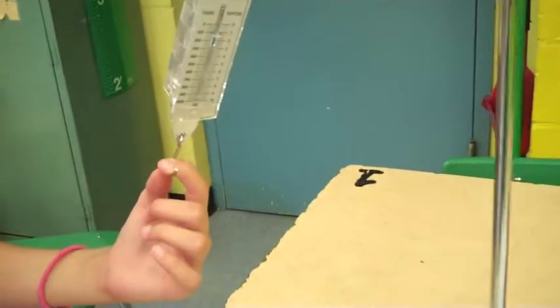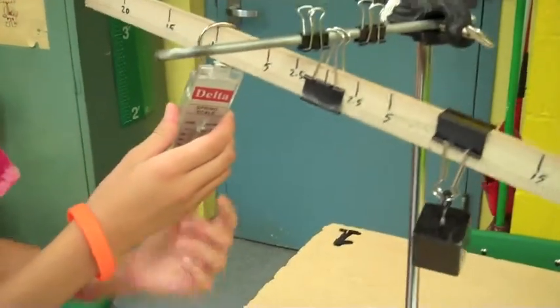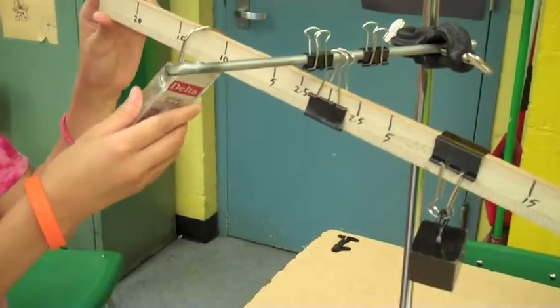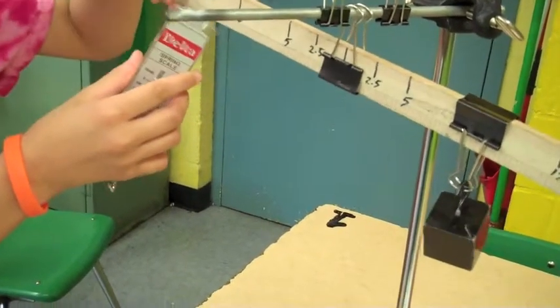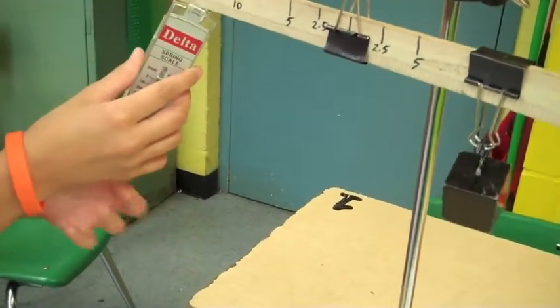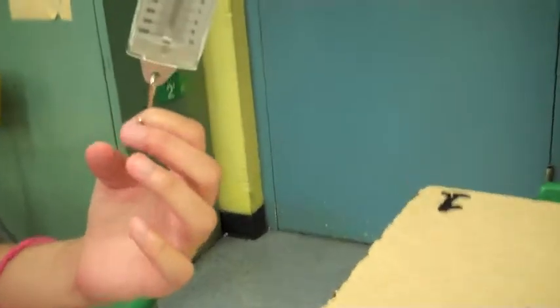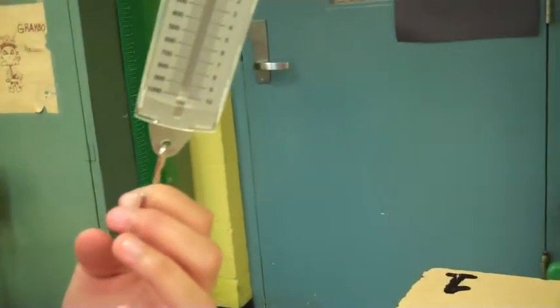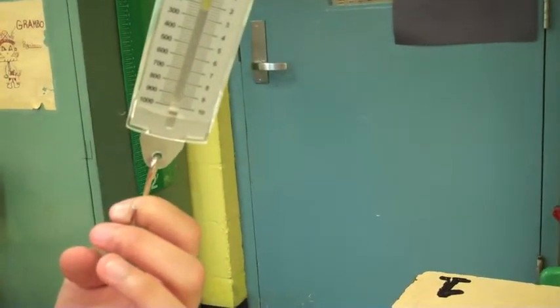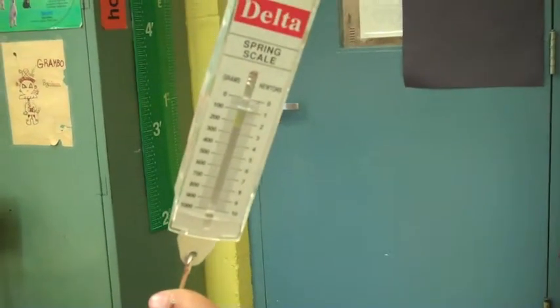We're now going to move to 15 centimeters away from the fulcrum. And we're going to pull down. And pulling down to balance this out is at about 75 grams.